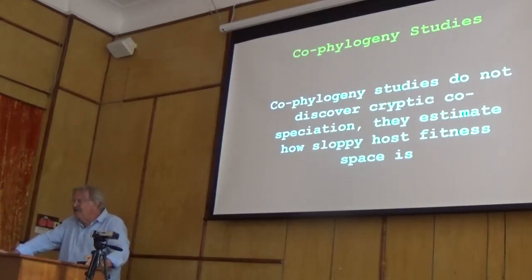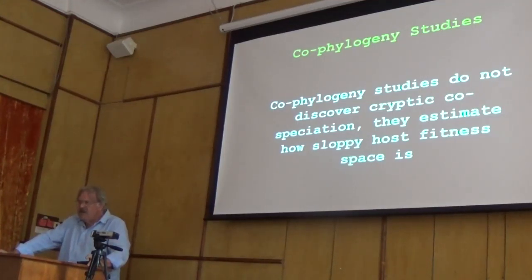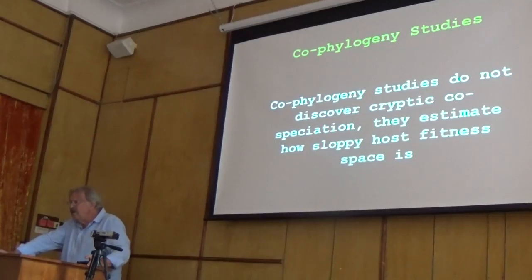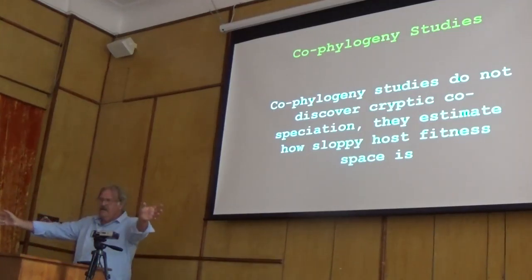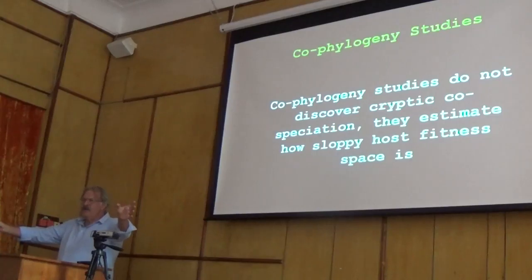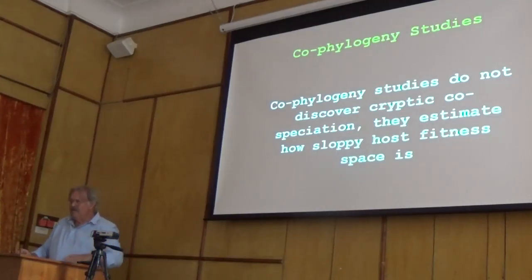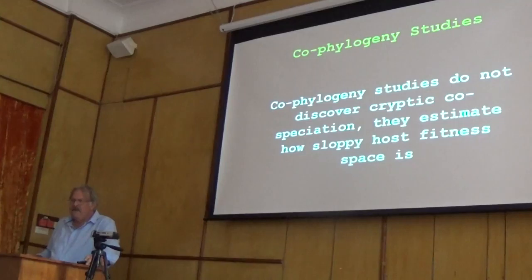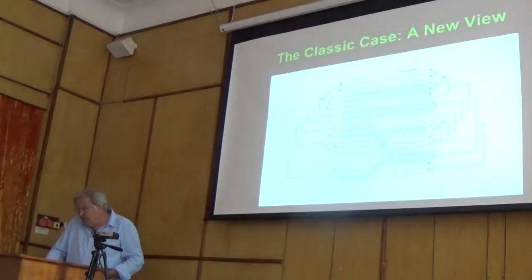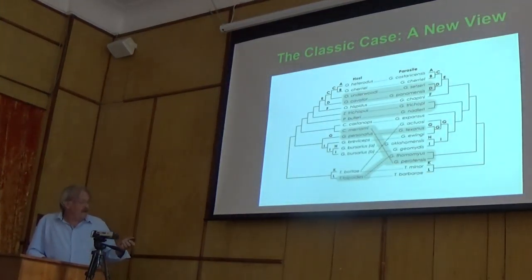The so-called co-phylogeny studies are an interesting exercise in academic denial. The methods were developed to help us maintain the mythology that there was co-speciation between pathogens and hosts, despite the evidence. The co-phylogeny studies are basically methods designed to allow you to believe that any amount of host switching is the result of cryptic co-speciation. The reality is that what co-phylogeny studies do is give us an estimate of how sloppy the fitness space is for any given pathogen.